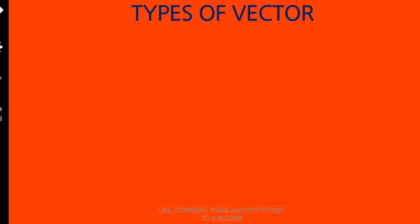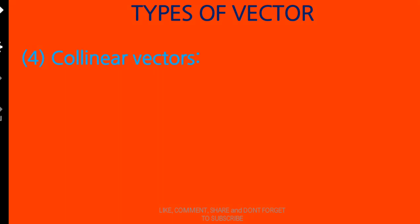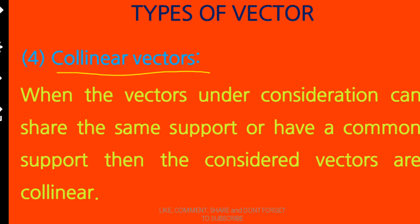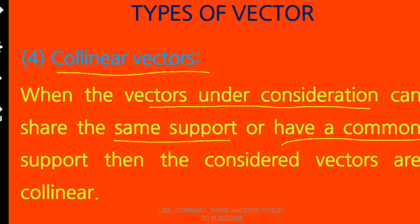The fourth type is collinear vectors. When the vectors under consideration can share the same support or have a common support, the considered vectors are said to be collinear vectors.